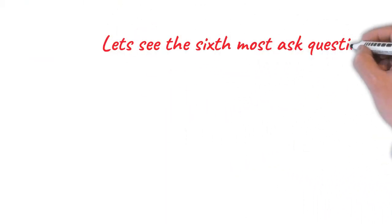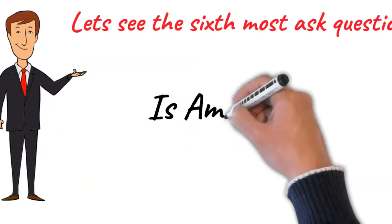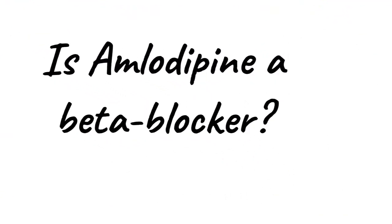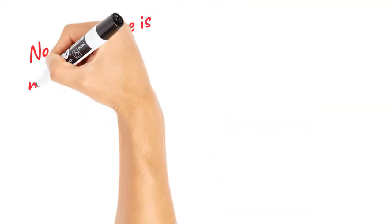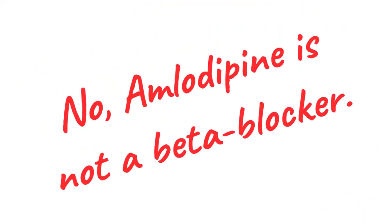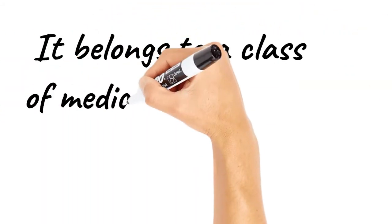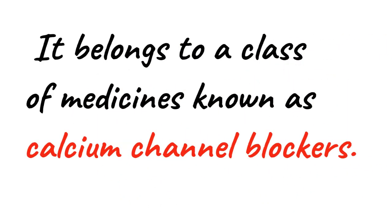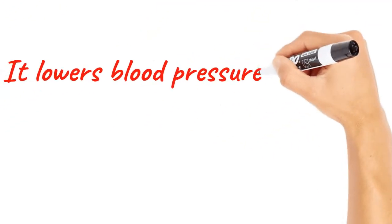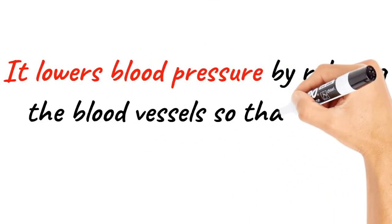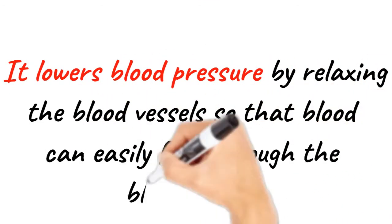Let's see the sixth most asked question. Is amlodipine a beta blocker? No, amlodipine is not a beta blocker. It belongs to a class of medicines known as calcium channel blockers. It lowers blood pressure by relaxing the blood vessels so that blood can easily flow through the blood vessels.